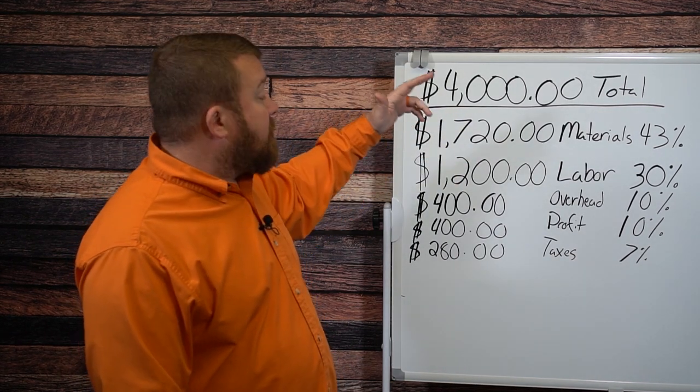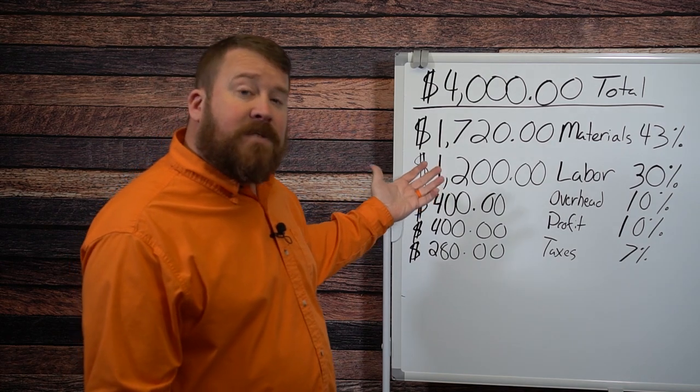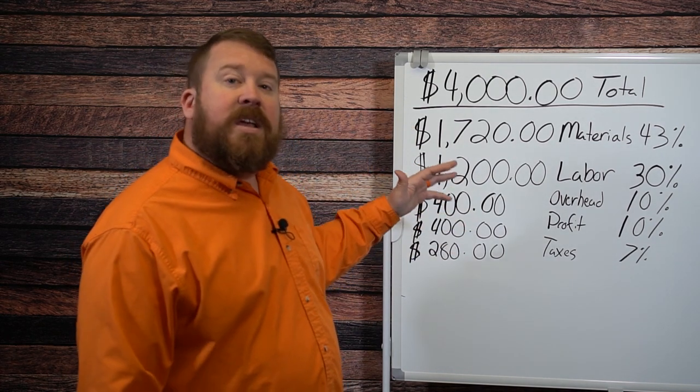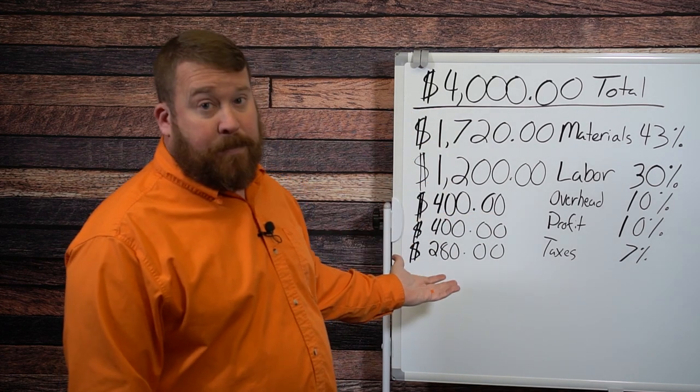The labor, 30%. Overhead and profit each account for 10% of the total. Taxes, the effective tax rate is usually 7% of the total for this company.